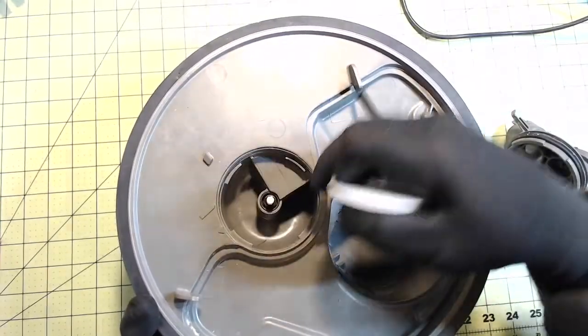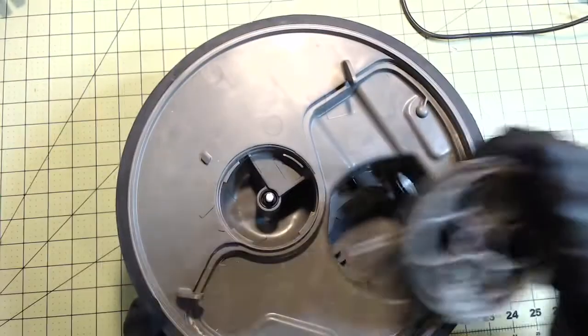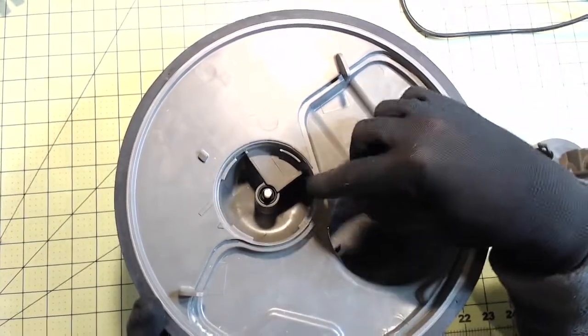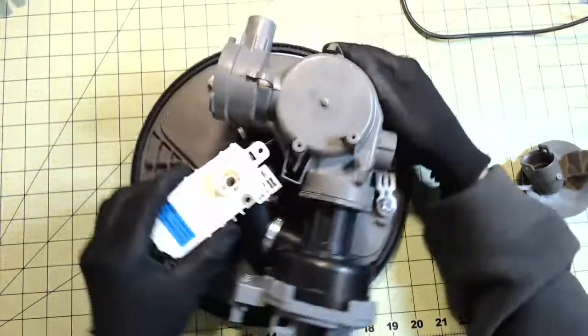And the diverter, what it'll do is the motor will turn this shaft and will turn that hole to meet up with whichever hole it wants to divert water to at that part of the cycle. That's pretty self-explanatory there.